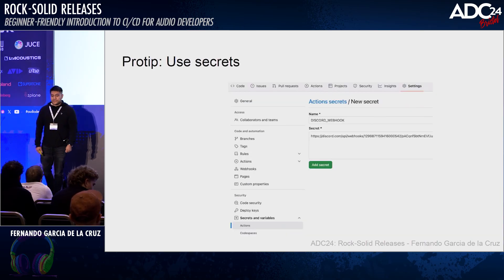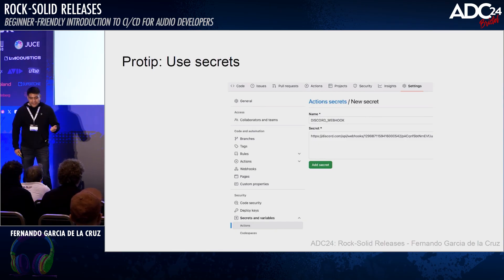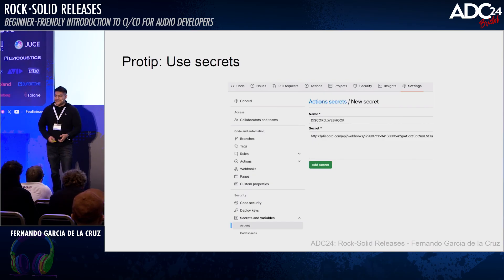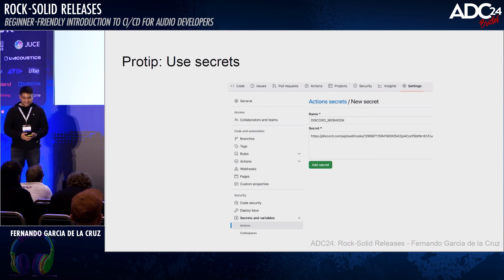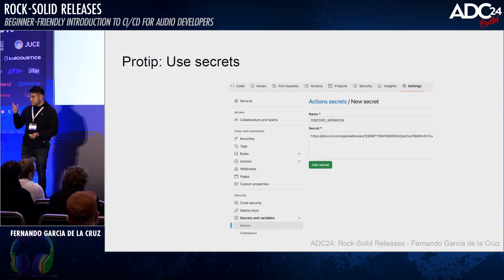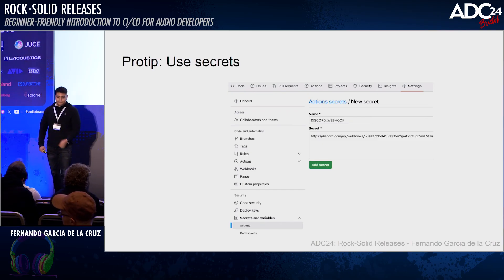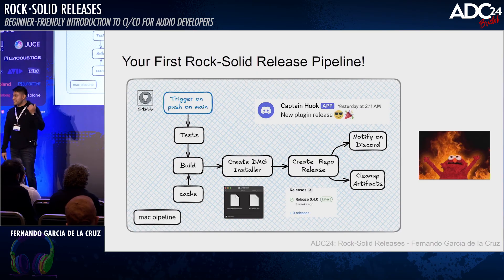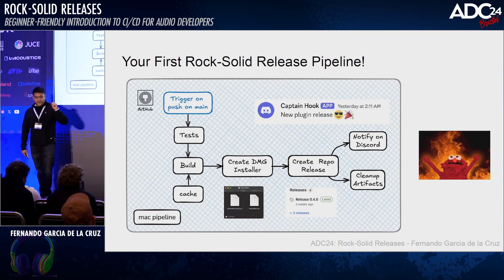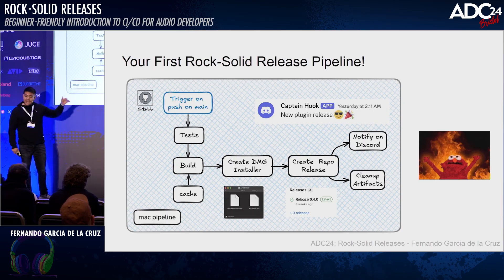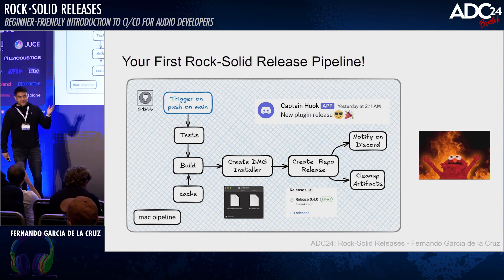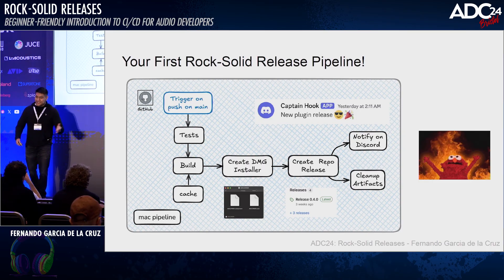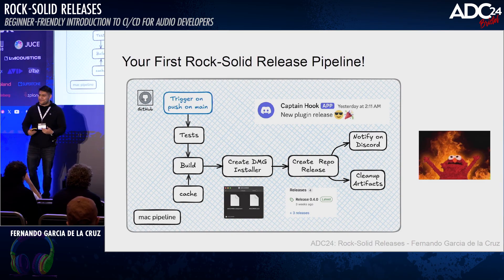Another pro tip: use secrets to store sensitive information. For example, you can integrate a Discord webhook so that every time you build a new version of your plugin, you receive a nice notification — like, 'hey, new plugin, fresh out of the oven.' You can store that webhook string in the secret variables available in GitHub Actions. Let me present your very first rock-solid release pipeline that I propose: you run tests, build the plugin using cache, create a DMG installer, create a repository release, and maybe send a notification on Discord. At the end you have a nice installer ready to use.